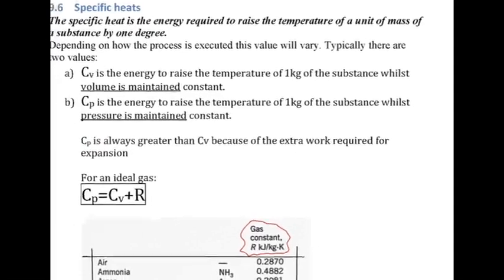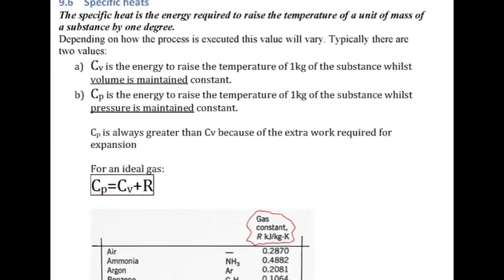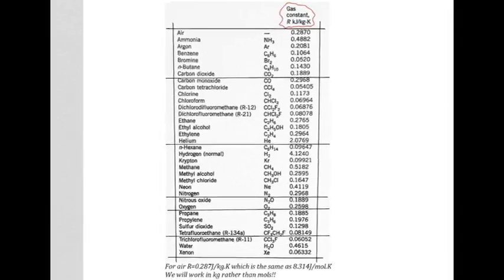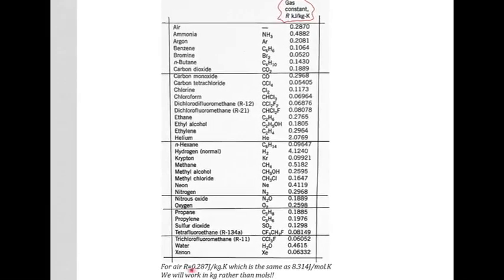The difference between the two is that CP equals CV plus a new value called R. This value R, better known as the gas constant, has units of kilojoules per kilogram Kelvin and varies quite extensively between substances. Here's a table — for air, R is 0.287 kilojoules per kilogram Kelvin, and there are many other gases listed. Keep this table handy as we'll need it again.